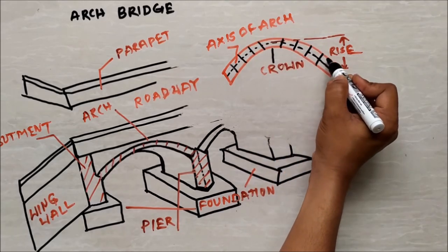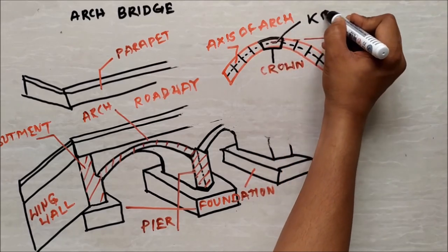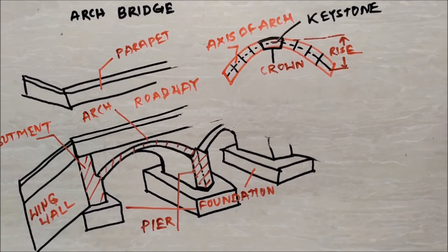The wedge-shaped unit which is fixed at the crown of the arch is called keystone. It is the final piece placed during construction and locks all the units in position, allowing the arch to bear the weight.